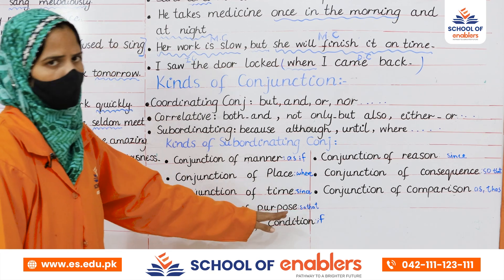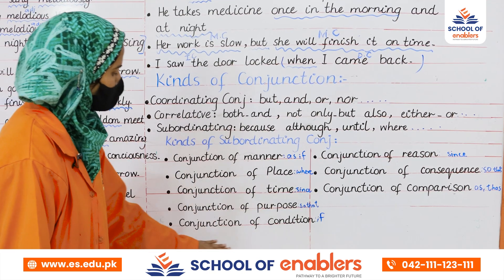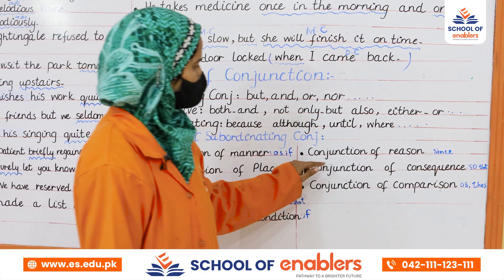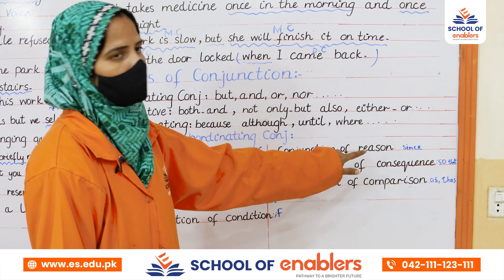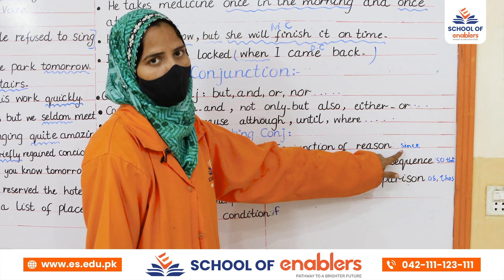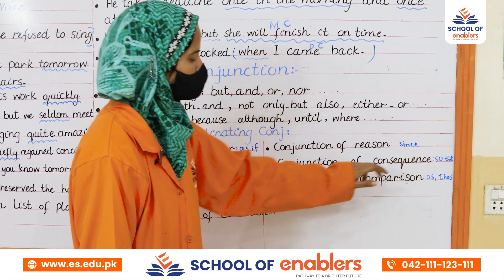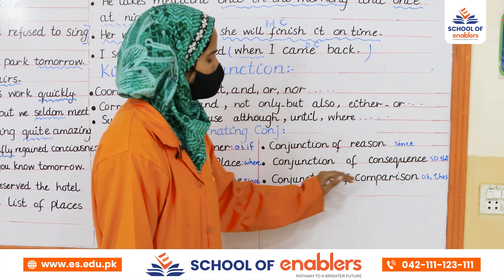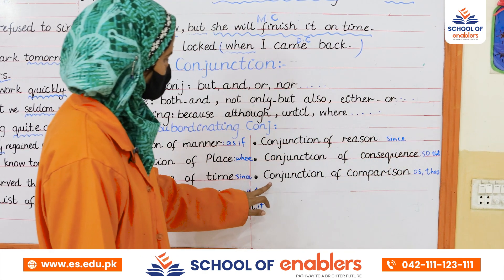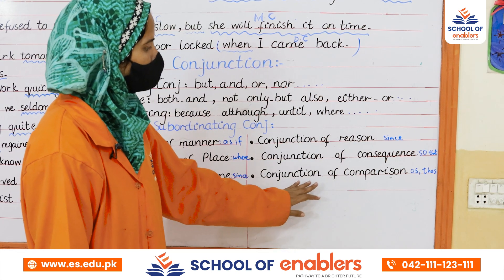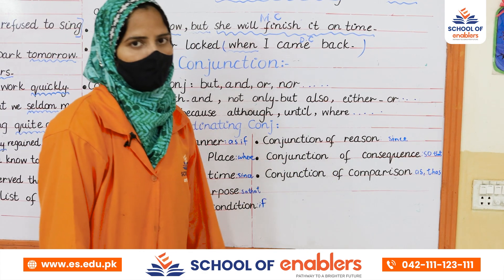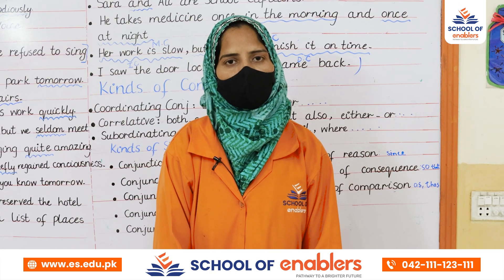Conjunction of purpose: words used to connect clauses showing purpose, like 'so that.' Conjunction of condition: used in sentences with a condition, like 'if.' Conjunction of reason: used to give a reason, like 'since' — for example, 'Since he asked me for help but I could not do so.' Conjunction of consequence uses 'so that.' Conjunction of comparison compares things, like 'as...as' — for example, 'He is as beautiful as the moon.' That's all — wishing you best of luck, stay safe!